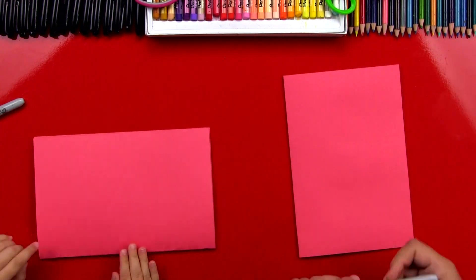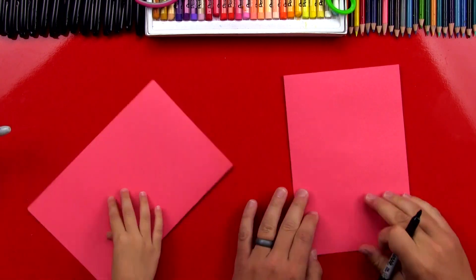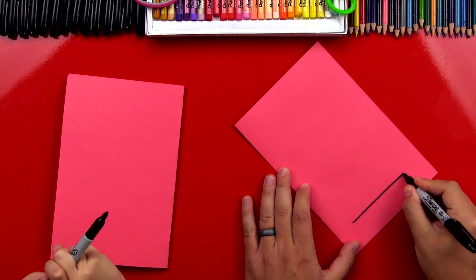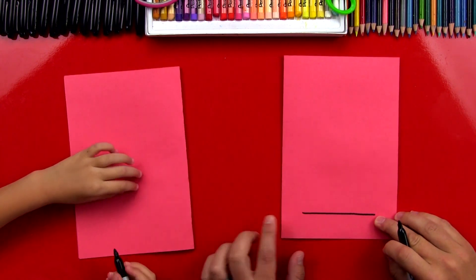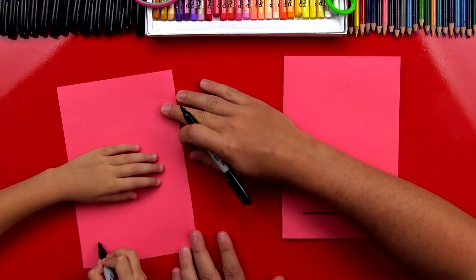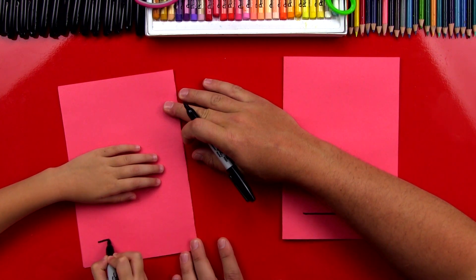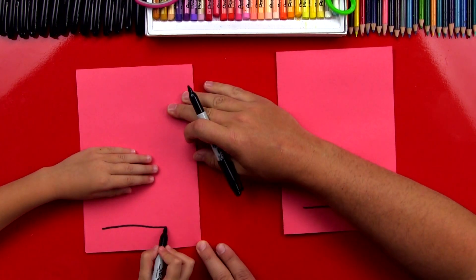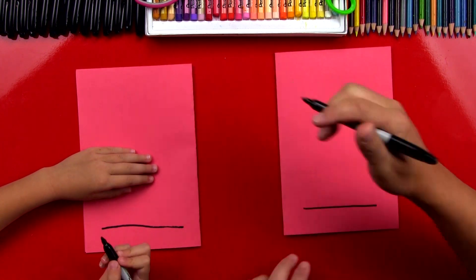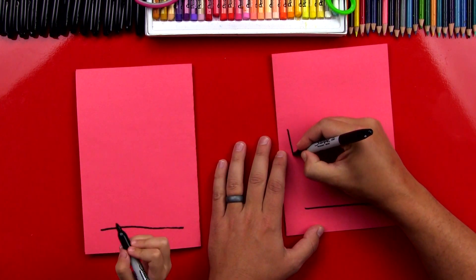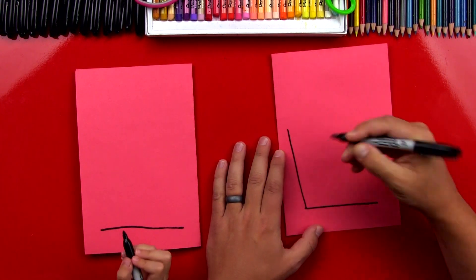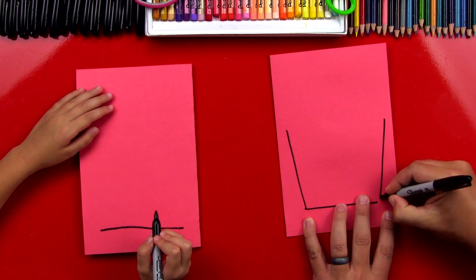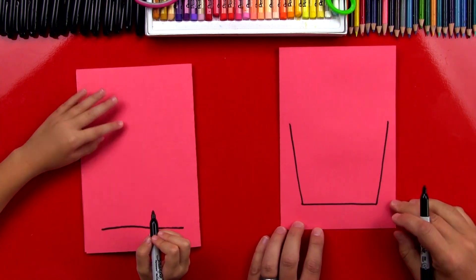Now on our french fry box, we're going to draw the bottom of our french fry box first. So let's draw a line down at the bottom, like that. We're going to draw it really big, so we're almost all the way to the edges. Right here? Yes.